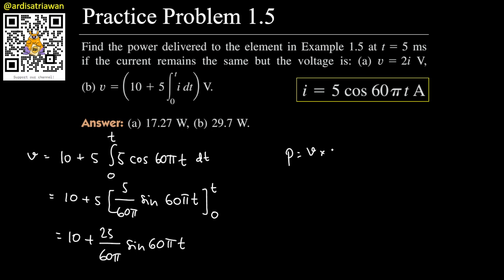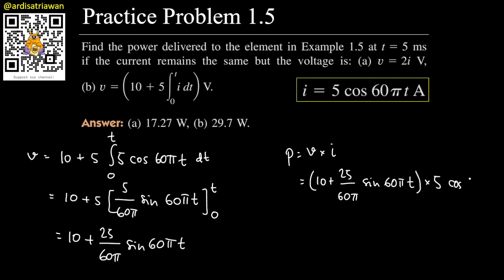To find the power, we multiply the voltage by the current. So p = [10 + (25/60π) sin(60πt)] × 5 cos(60πt). Since we are asked for p at t = 5 milliseconds, we'll plug that into the calculator directly.